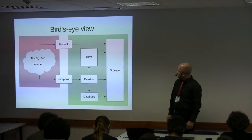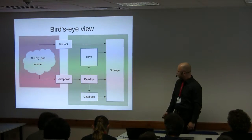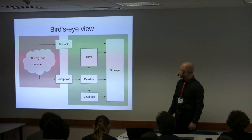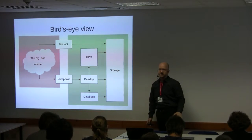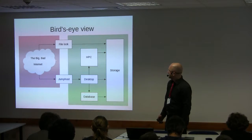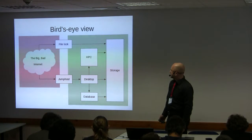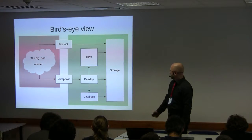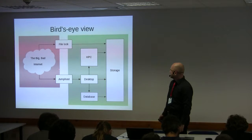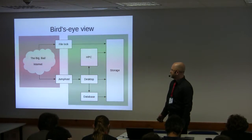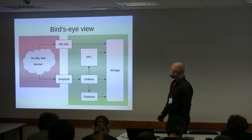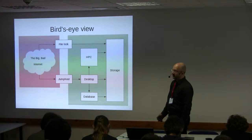Bird's eye view: we have the big bad internet, traditionally represented as a cloud. We have two interfaces between the internet and our green walled garden. One of them is the file lock I just described. The other is the jump host — there are actually two jump hosts that are redundant — which are the main entry point for users into the system.